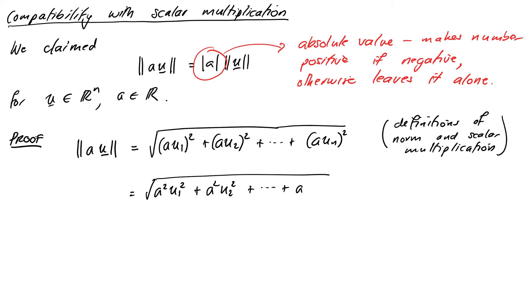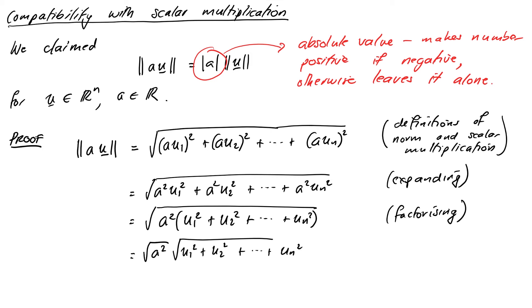So it will be the square root of a²u₁² + a²u₂² all the way through to a²uₙ². I can see a common factor of a² inside there, so let's just take it out. It will be the square root of a² times (u₁² + u₂² + ... + uₙ²). Now I know that the square root of a product is the product of the square roots.